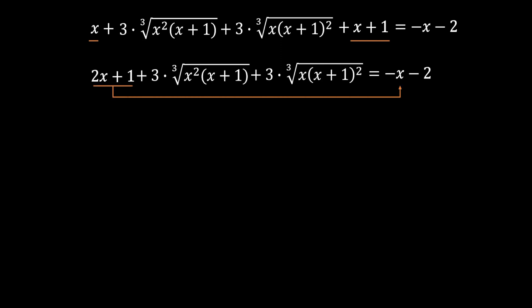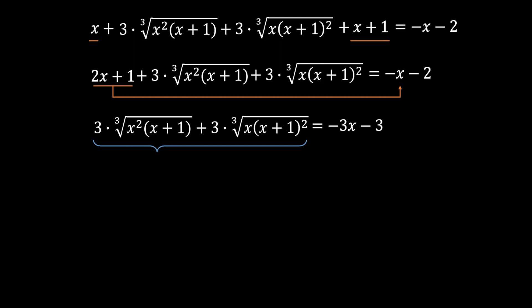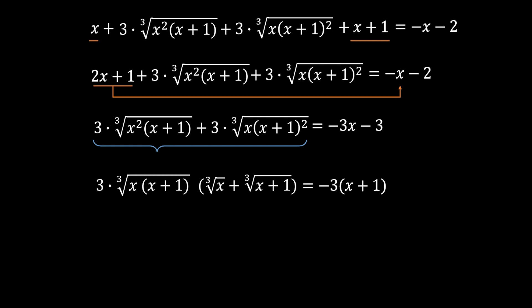We move (2x + 1) to the right side. The right side becomes: minus 2x minus 2 minus 2x minus 1, which simplifies to minus 3x minus 3. On the left side, the common factor for the two middle terms is 3·(cube root of x(x+1)), and factoring it out leaves: cube root of x plus cube root of (x+1) in brackets. On the right side, factoring out minus 3 gives: minus 3·(x + 1).